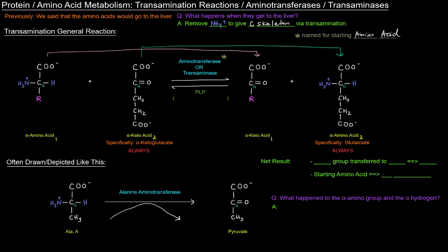Now, this general reaction up here is often depicted like this, where it just shows the starting amino acid and the carbon skeleton or the alpha keto acid, the results. And it shows the alpha ketoglutarate like this becoming glutamate. It's not explicitly showing the structure. It's just to save space because it's understood what's going on here when we have alpha ketoglutarate going to glutamate. The question might be, though, is what happened to the alpha amino group and the alpha hydrogen here? Where did they go? I don't see them. Well, it's not explicitly shown, but the amino group and the alpha hydrogen were attached to alpha ketoglutarate. It was transferred over there to produce glutamate. It's just not explicitly drawn or shown. It doesn't mean that it didn't happen.